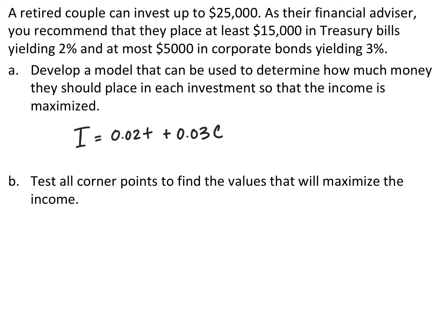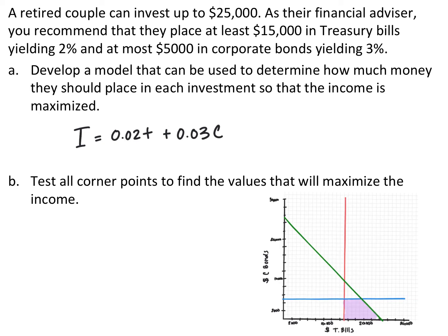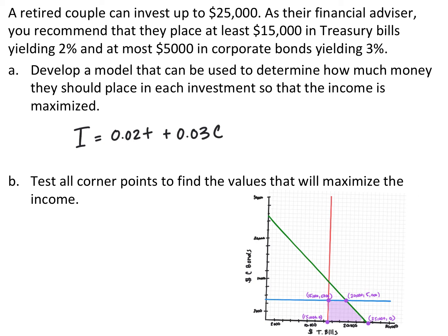We're going to go back to our inequality graph and test and label all the corner points — the intersection points of the solution region. The four corner points are (15000, 5000), (20000, 5000), (25000, 0), and (15000, 0). Our solution will be one of those four points.